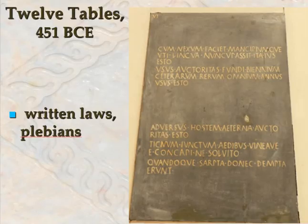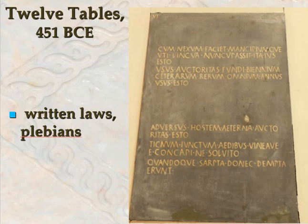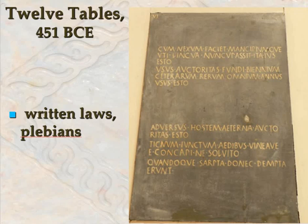More importantly, a key step forward in defending the rights of plebeians was creating a written law code for the first time. The 12 Tables, put forth in 451 BCE, will be the first written set of laws in Roman history. They had passed laws down orally for many generations, but this put the plebeian or poorer classes at a disadvantage. If the patrician class decided to take away some of your rights, you had no way to stop that without a written constitution or written body of laws to serve as a reference point. Just the fact that these laws are written down greatly benefits the poorer classes and helps keep them from being as exploited as they had been in prior generations.